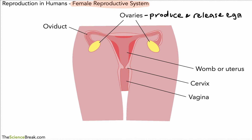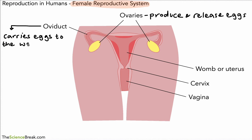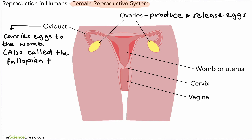The ovaries produce and release egg cells — you could say they mature and release egg cells. The oviduct is a tube where the egg cell travels along, carrying egg cells to the womb. Worth remembering that another name for the oviduct is the fallopian tube — two names for the same structure: oviduct or fallopian tube.